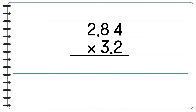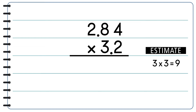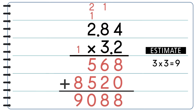Let's do another example: 2.84 times 3.2. Let's solve this using the estimation method. We round our factors to get 3 times 3, which equals 9. So our final answer should be around 9. Now we multiply 2.84 times 3.2 as the whole numbers 284 and 32 to get 9,088. We know our final answer should be around 9, so we put the decimal point right after the 9.